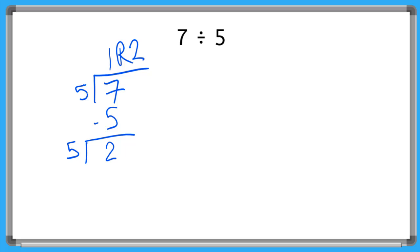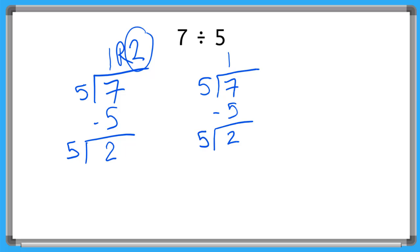But this lesson is on writing my remainder as a decimal, so let's try it again. 5 goes into 7 how many times? It's 1, and 1 times 5 is 5, and if I subtract that I have a 2. Now I'm going to convert this 7 to a 7.0, because 7 is the same as 7.0. Now that I've put this decimal here, I have to put it right above it in my answer.